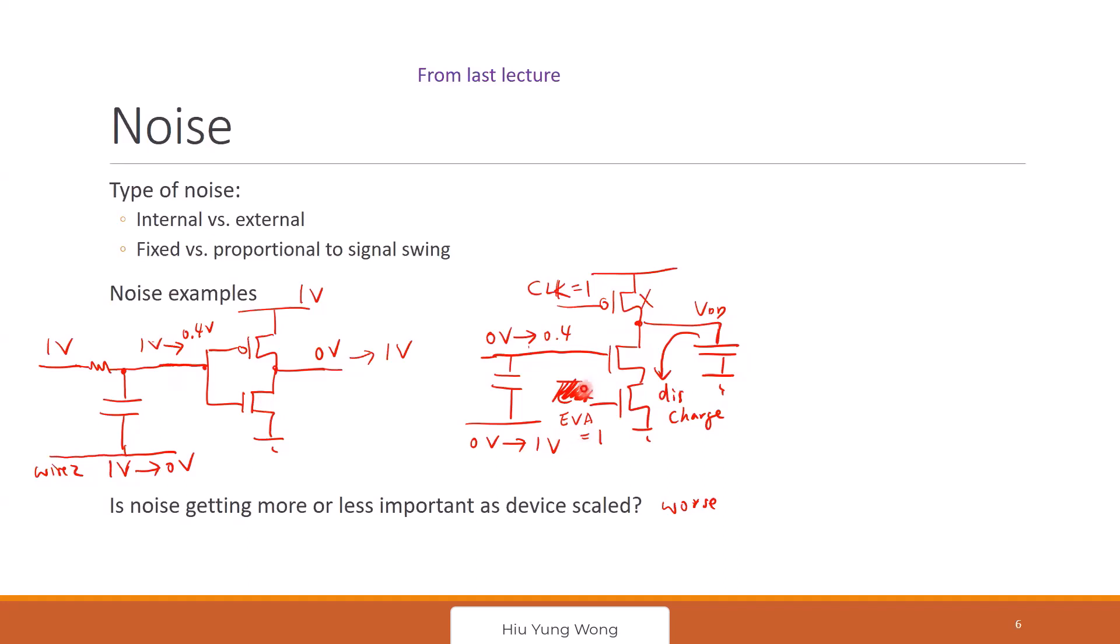But the mistake I make is that I put the wrong signal here. It should not be a clock bar. It should be clock, actually. I should put clock, or just put evaluation. Any question about this?